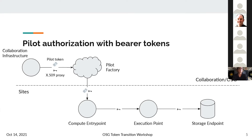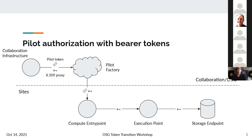In the token world, we can do pilot authorization with bearer tokens. In the short term, there will still be X509 proxies for storage access. The collaboration or VO will generate the pilot token and X509 proxy and pass both to the factory. The factory submits the job with both credentials to the CE, but the CE only authenticates the pilot based on the pilot token. Only the X509 proxy is then passed to the execution point for storage access.